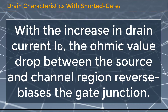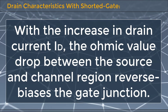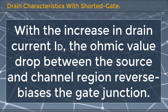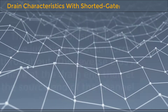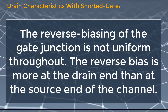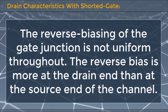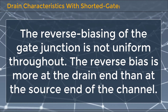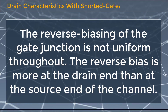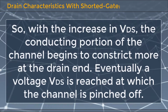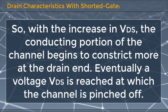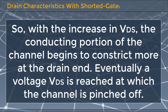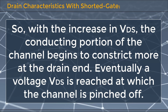With the increase in drain current ID, the ohmic voltage drop between the source and the channel region reverse biases the gate junction. The reverse biasing of the gate junction is not uniform throughout — it is more at the drain end than at the source end. So, with the increase in VDS, the conducting portion of the channel begins to constrict more at the drain end.